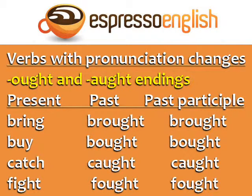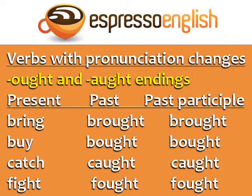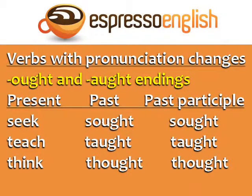Finally, we have the verbs with OUGHT endings in the past and past participle. This can be spelled O-U-G-H-T or A-U-G-H-T, but the pronunciation is the same. Bring, brought, brought. Buy, bought, bought. Catch, caught, caught. Fight, fought, fought. Seek, sought, sought. Teach, taught, taught. Think, thought, thought. Remember that the G is silent in these verbs.